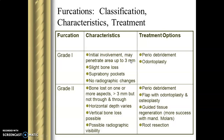Furcation classification: Grade 1 involves around 3 mm of area, with slight bone loss, suprabony pocket, and no radiographic changes. Treatment is periodontal debridement — oral prophylaxis and odontoplasty. Grade 2 involves bone loss on one or more aspects, more than 3 mm but not through-and-through. There is variable horizontal depth, vertical bone loss, and radiographic changes. Treatment options include periodontal debridement, odontoplasty, osteoplasty, and guided tissue regeneration.